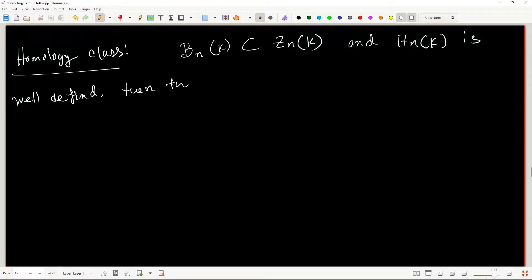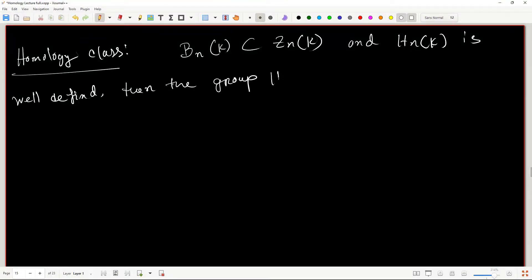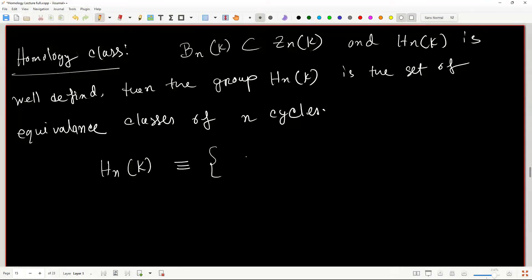then the group HN of K is the set of equivalence classes of N cycles. That is, your HN of K is equivalent to this equivalence class, where the elements from these classes belongs to your ZN of K, where this equivalence class is called a homology class.